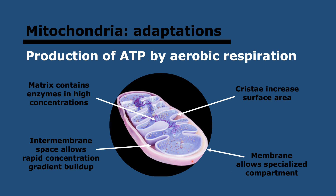First, it has an outer membrane — you can see it here in pink — which separates the mitochondria from the rest of the cell, allowing it to be a specialized compartment. Then we also have the intermembrane space over here, between the two membranes. It's very, very small, as you can see, so it allows concentration gradients to build up very quickly, which is useful in aerobic respiration.